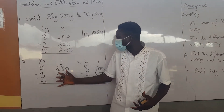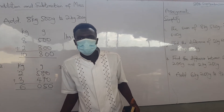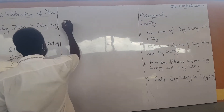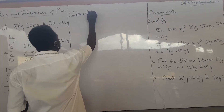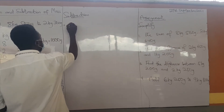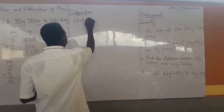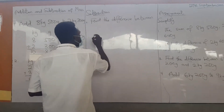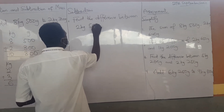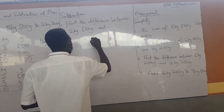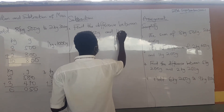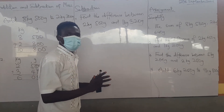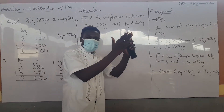Now let's look at the subtraction. We do the normal addition and subtraction — if it is not possible, we borrow. So let's say we have for subtraction: find the difference between 200 kg 500 grams and 1 kg 300 grams. If you are dealing with masses, arrange kilograms under kilograms, grams under grams.